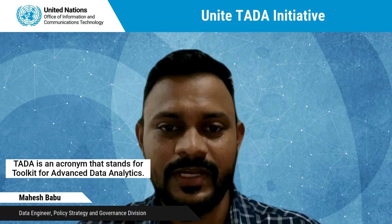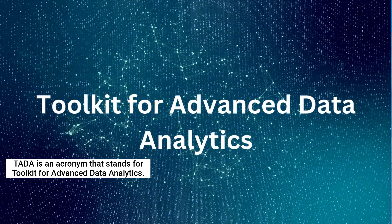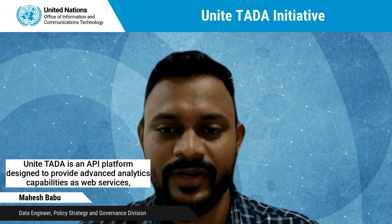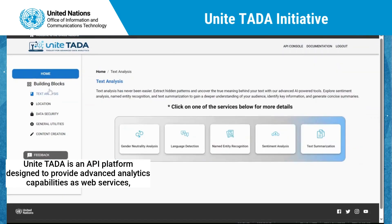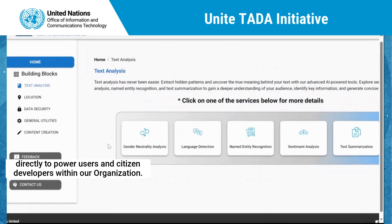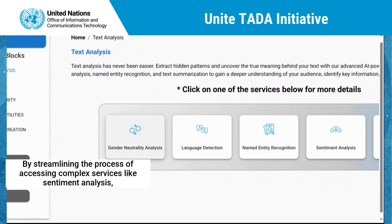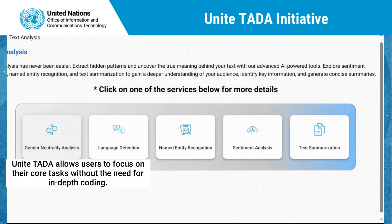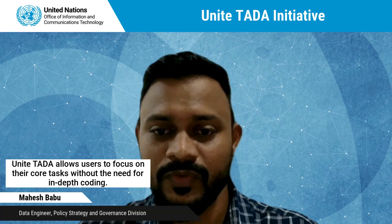UNITED is an acronym that stands for Toolkit for Advanced Data Analytics. UNITED is an API platform designed to provide advanced analytics capabilities as web services, directed to power users and citizen developers within our organization. By streamlining the process of accessing complex services like sentiment analysis, UNITED allows users to focus on their goals without the need for in-depth coding.